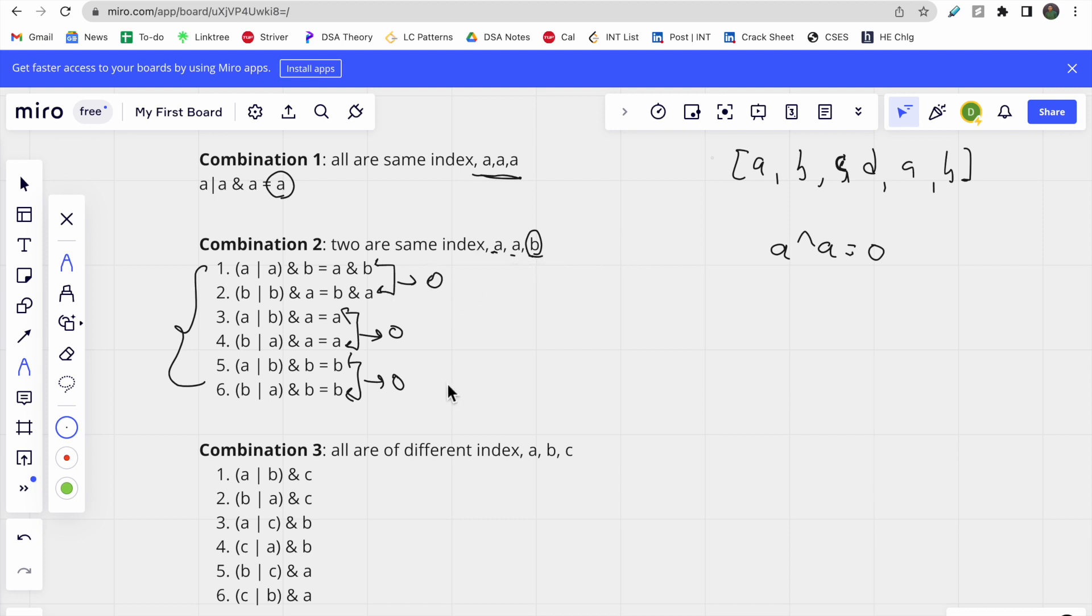The third combination has all three numbers different: a, b, and c. One possible combination is (a OR b) AND c, and another is (b OR a) AND c. Whatever the answer, both will result in the same value because OR is commutative.